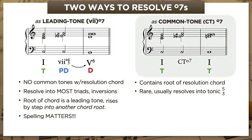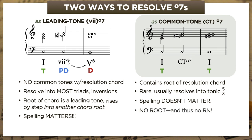But with common-tone diminished sevenths, spelling really doesn't matter at all. Schubert spelled this chord F sharp, A, C, E flat, but he could have spelled it with D sharp instead of E flat and it wouldn't make any difference — it would do the same thing. Because you can spell it multiple ways without changing what it is or what it does, we can't really say that it has a root. And since it doesn't have a root in any meaningful sense, it doesn't get a Roman numeral either. That's why we just use CT circle 7.